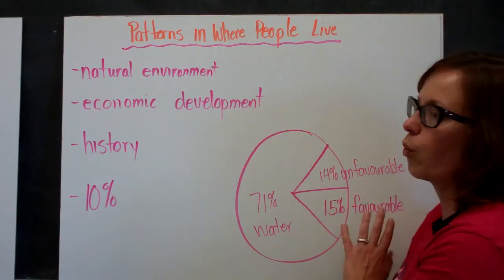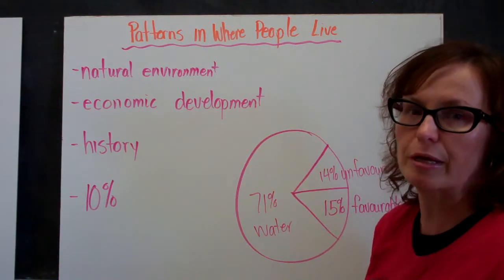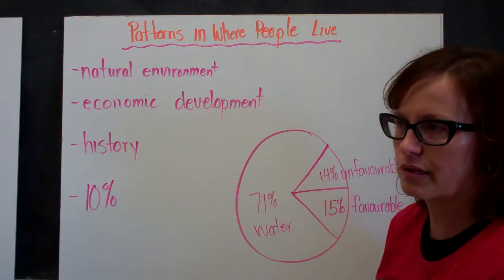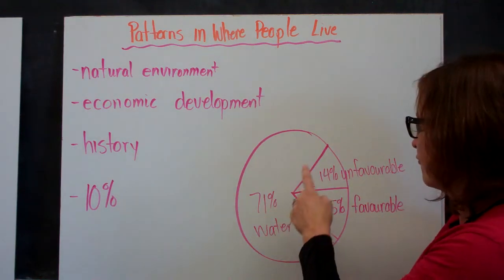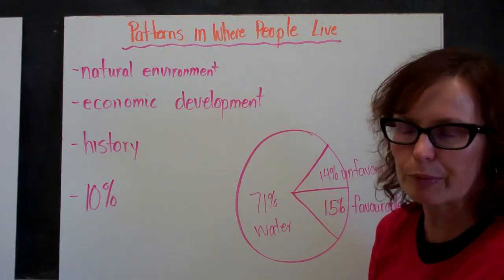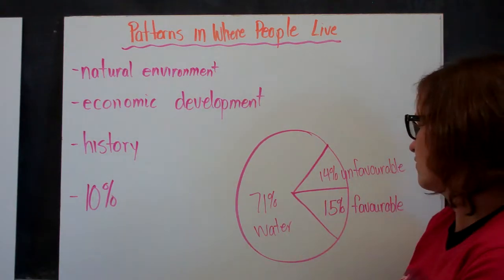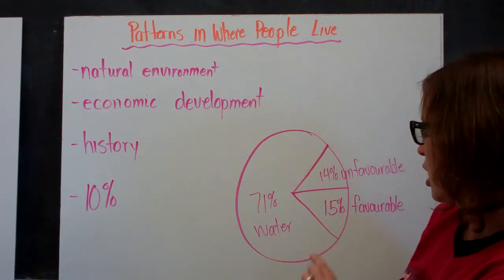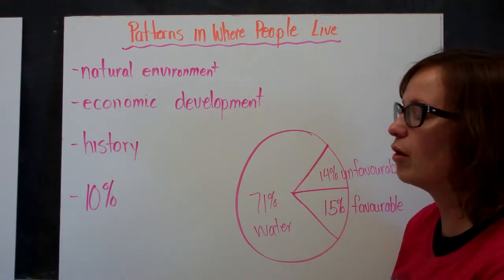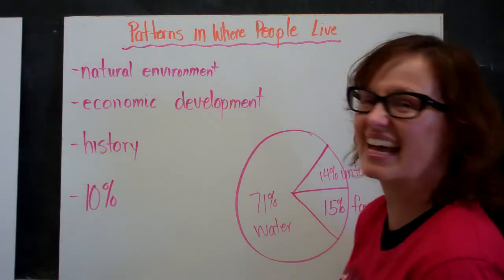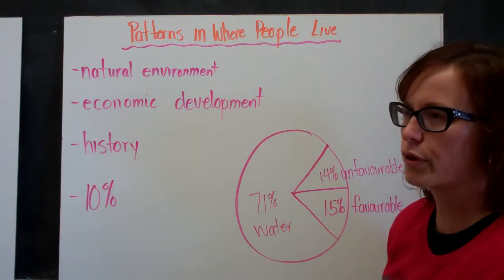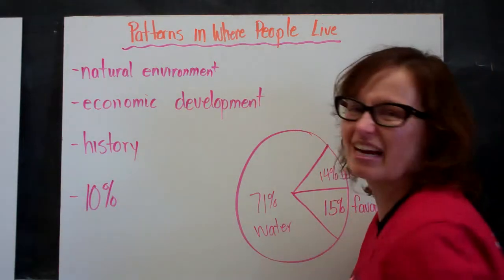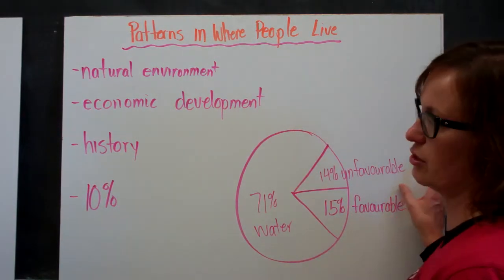But I wanted you to consider the opportunities for where people can live on the Earth. 71% of the Earth's surface is water, 14% of it is unfavorable, and 15% of it is favorable, meaning people can live and sustain themselves there. But of that 15%, most people live on 10% of the Earth's surface. So when we're talking about population density and where people live, we're actually only talking about 10% of the Earth's surface.